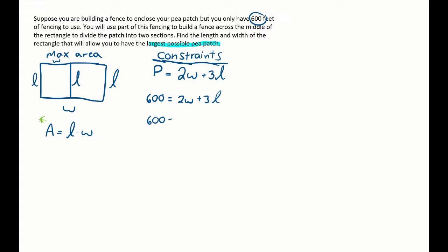Let's solve for w this time. So we'll go 600 minus 3l is equal to 2 times w. Divide by 2. And I get 300 minus 3l divided by 2 equals w.